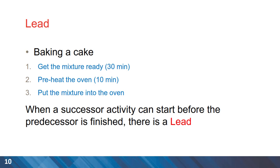This is a negative lag and we can illustrate this using an example of baking a cake. In the first activity, we need to get the mixture ready and it takes about 30 minutes. And the second activity is preheating the oven for a duration of 10 minutes. A good point about activity two is that we don't need to wait until the first activity is concluded or finished until we start the oven. So we can do parallel works in here and save some time. This is exactly what lead means.